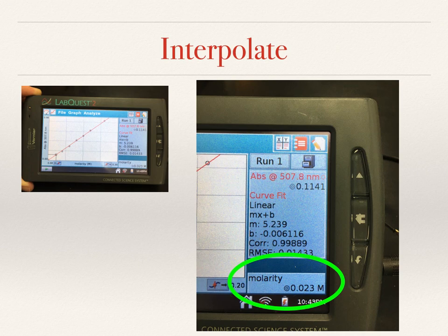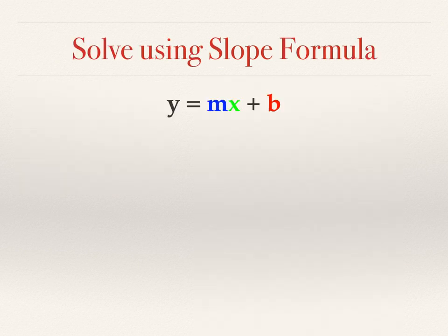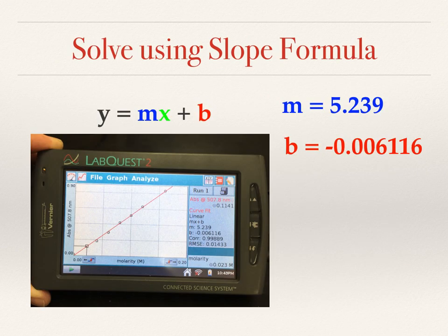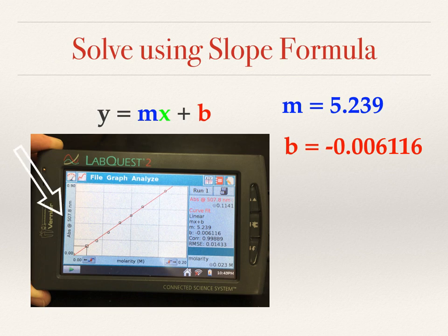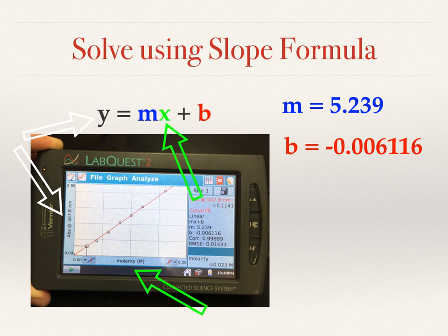We can also find the concentration of our unknown using our slope information and the slope formula. Our slope formula is y = mx + b, and we were given the slope and the y-intercept before — it still shows on our screen. We recognize that y is absorbance and x is molarity, so that's what we solve for. Our unknown absorbance is 0.116. Even though we already interpolated it, we'll compare the interpolation to our calculation.